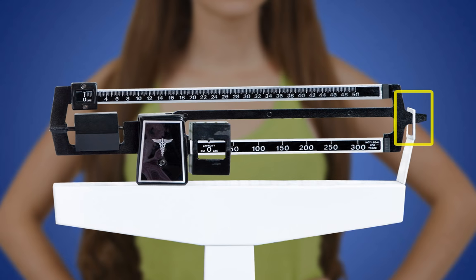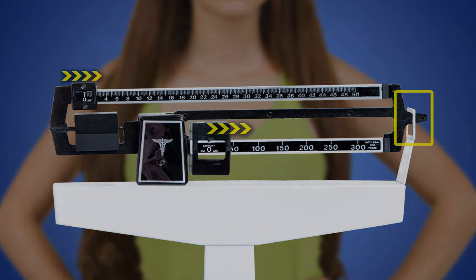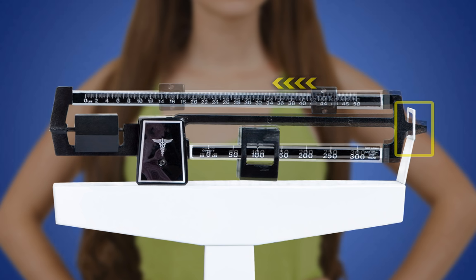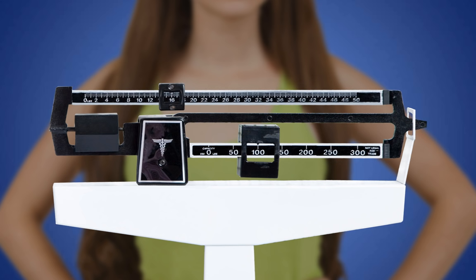If the balance bar is touching the top of the window, you need to increase the amount of weight on the scale. If the balance bar is touching the bottom, you need to decrease the amount of weight on the scale. Remember, the goal is for the balance bar to float in the center of the balance window.